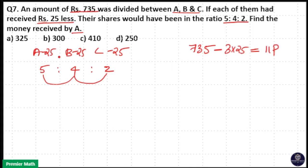Because the total money with them was 735, and if 25 rupees is subtracted from each of them, then their ratio will be 5:4:2. So 11 parts equals 735 minus 75, that means 660 equals 11 parts, and 1 part equals 60.